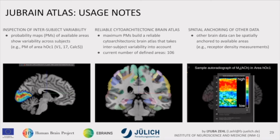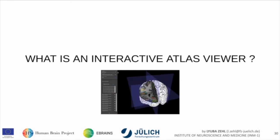This is the muscarinic M3 receptor in HOC1 — you can see the distribution of it in one sample. Usually they provide fingerprints: an average density of one receptor with standard deviation based on five samples from five different humans. These are metadata you can also find in our database. So what is an interactive atlas viewer? Usually we're not just saying we're providing atlases — we're providing interactive atlases at the HBP.